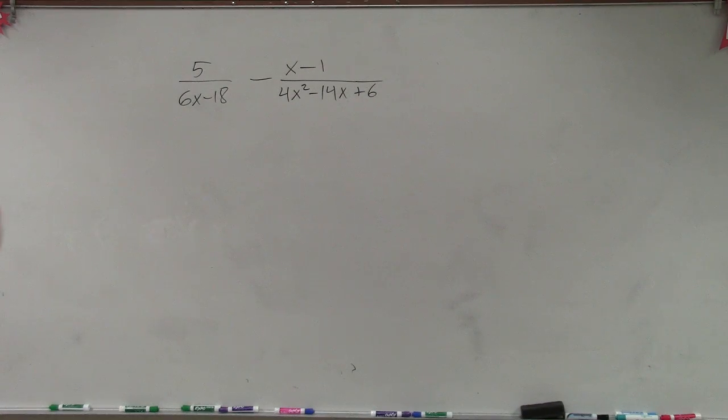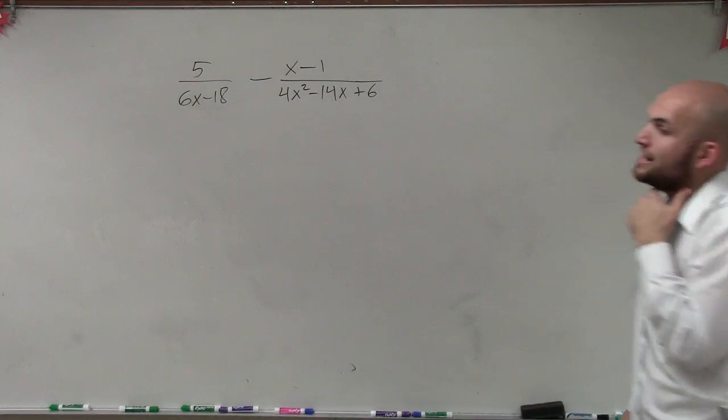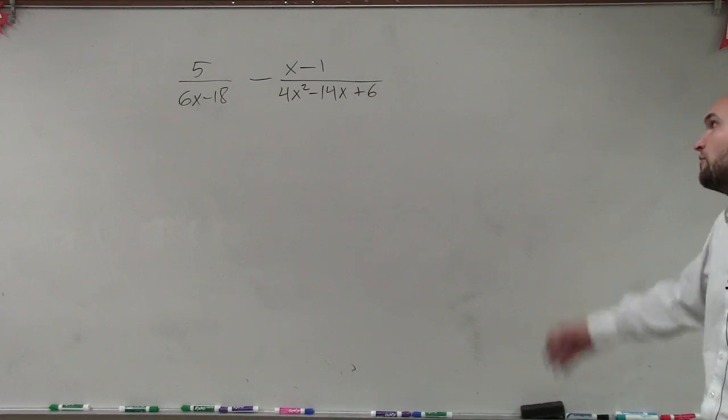All right, so in this problem I have 5 divided by 6x minus 18 minus x minus 1 divided by 4x squared minus 14x plus 6.